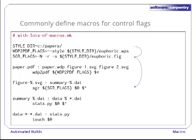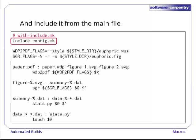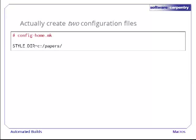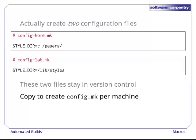And now we're ready to solve our original problem. Let's move the definition of styledir — the macro that changes from machine to machine — out of our main makefile and into a makefile of its own called config.make. We can then include that file in our main makefile using make's include command. Our other macros and commands can then use the definition of styledir just as if it had been defined in the main makefile. Once we've tested this to make sure it works, we can copy config.make to create two files that we will put under version control: config.home.make, which defines styledir for use on our laptop, and config.lab.make, which defines it for use in the lab. These two files go in version control and are only changed when they need to be — when the style files move or their names change. We then copy one or the other on the machine we're using to create the file config.make that our main makefile actually includes.